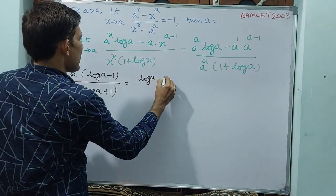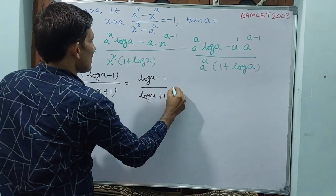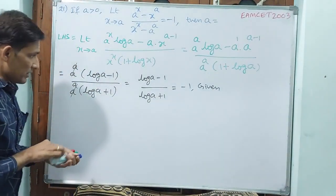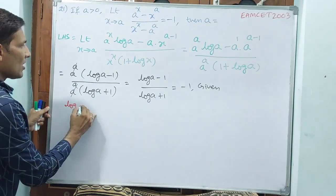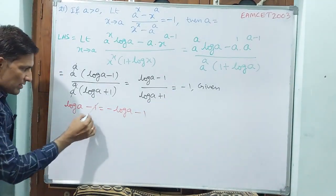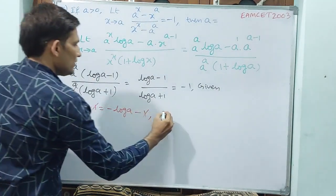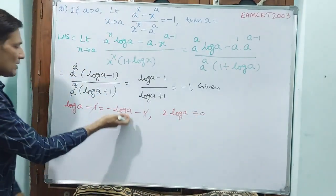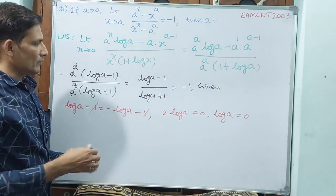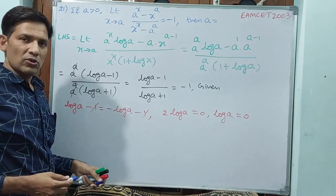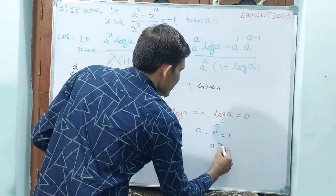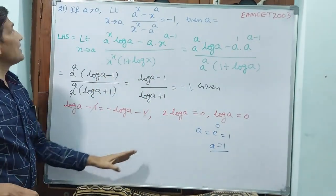Finally we write: log a minus 1 divided by log a plus 1 equals minus 1 (the RHS). Cross multiplying: log a minus 1 equals minus log a minus 1. The minus 1 cancels on both sides, leaving 2 log a equals 0, so log a equals 0, meaning a equals e power 0 equals 1. Since 1 is greater than 0, the answer is a equals 1.